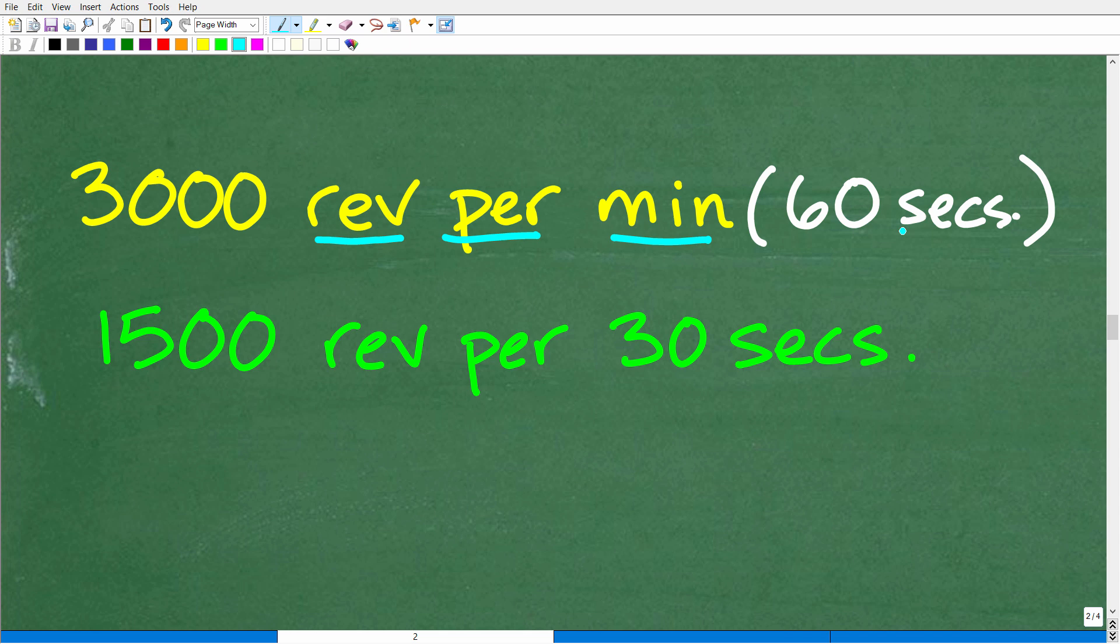So, pretty straightforward math here. How many revolutions will it make in 30 seconds? Well, it's going to be half of this 3,000. So, 3,000 divided by 2 is 1,500 revolutions in 30 seconds, okay? All right. So, that is how we solve this problem.